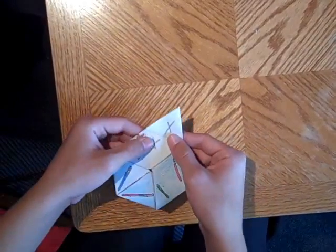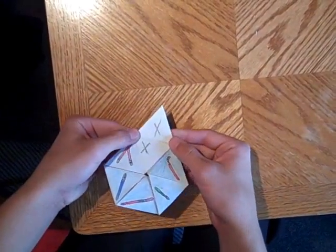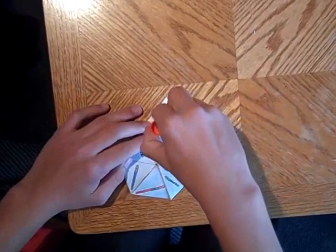And then if you did it right then on the back you'll have these two X's which is where you put the glue. So you glue that.